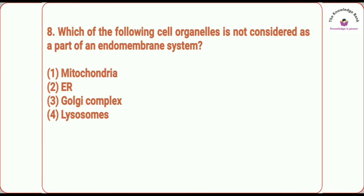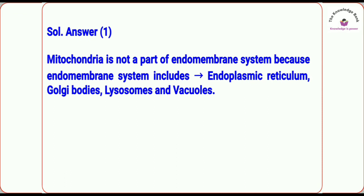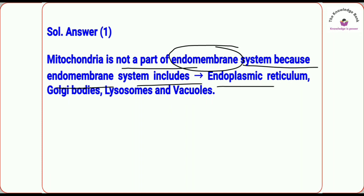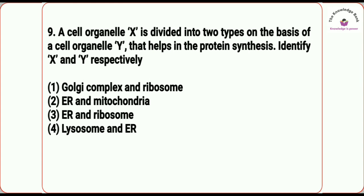Question number eight: which of the following cell organelles is not considered a part of the endomembrane system? The options are mitochondria, ER, golgi complex, and lysosomes. The correct answer is mitochondria. Mitochondria is not part of the endomembrane system. The endomembrane system includes the endoplasmic reticulum, golgi bodies, lysosomes, and vacuoles.